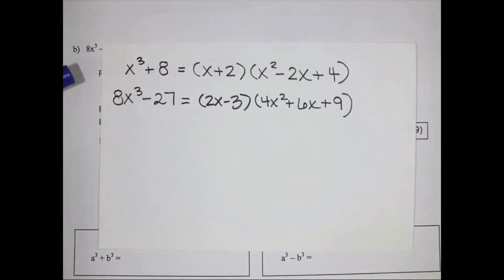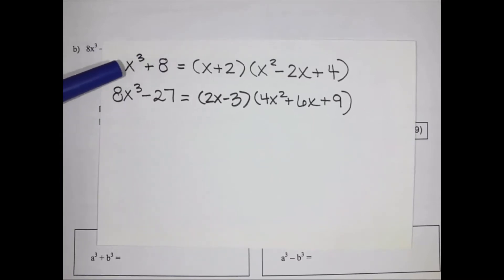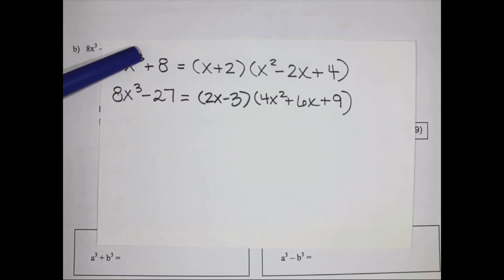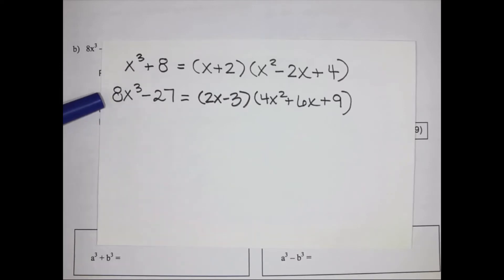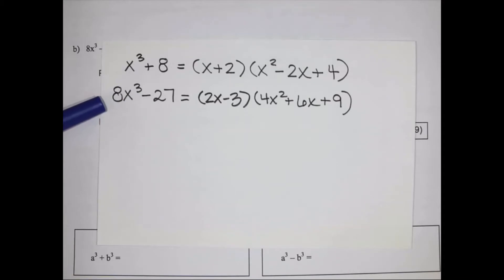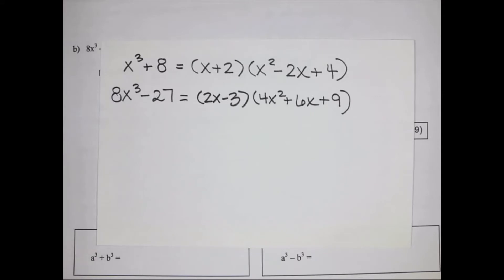This first one is something known as a sum of cubes. It is two terms being added — that's why it's a sum — and x cubed is a cube, and 8 is 2 to the power of 3, so it is 2 cubed. They are both perfect cubes. The second one, 8x cubed minus 27, is a difference of cubes — subtraction instead of addition — and 8 is 2 cubed and 27 is 3 cubed, so all of those are perfect cubes.